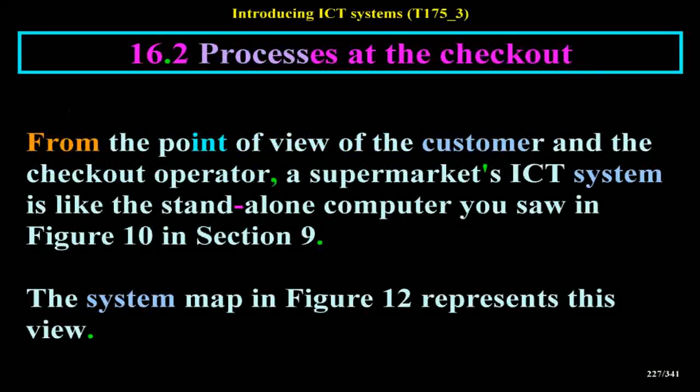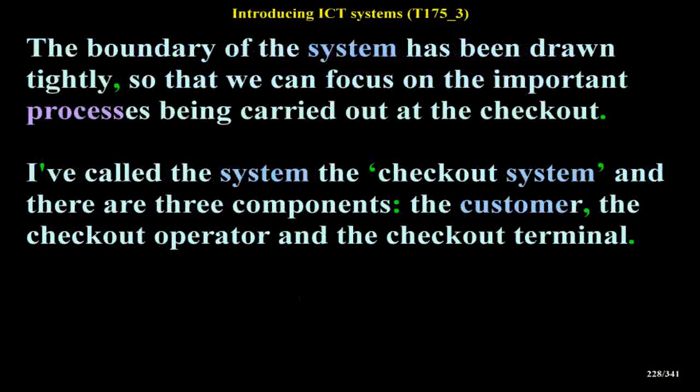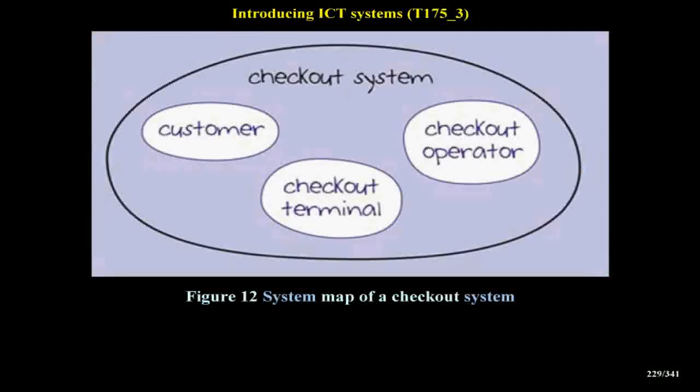Processes at the Checkout: From the point of view of the customer and the checkout operator, a supermarket's ICT system is like the standalone computer you saw in Figure 10. The system map in Figure 12 represents this view, with the boundary drawn tightly so that we can focus on the important processes being carried out at the checkout. The system is called a checkout system and has three components: the customer, the checkout operator, and the checkout terminal.